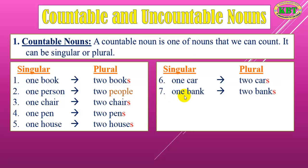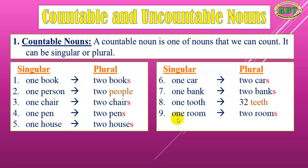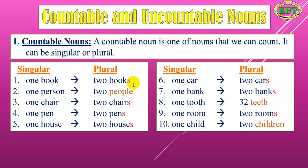Number seven: one bag, two bags. Number eight: one tooth, two teeth. Number nine: one room, two rooms. Number ten: one child, two children. Some plural nouns we add -s, and some plural nouns we change — for example, person changes to people.